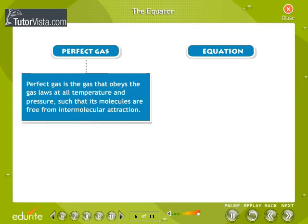If a gas obeys the gas laws at all temperatures and pressures, such that its molecules are free from intermolecular attraction, then it is called a perfect or ideal gas.